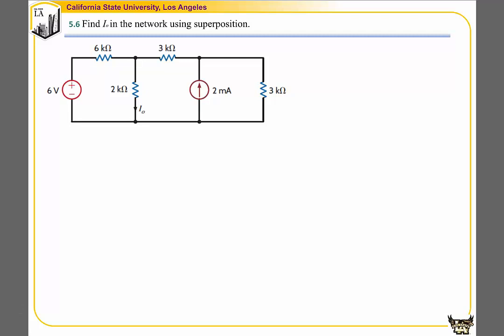In this example, we're going to find I0 in the network using superposition. By looking at this problem, we know it includes two power supplies: one is a 6-volt voltage supply and the other is a 2 mA current supply.